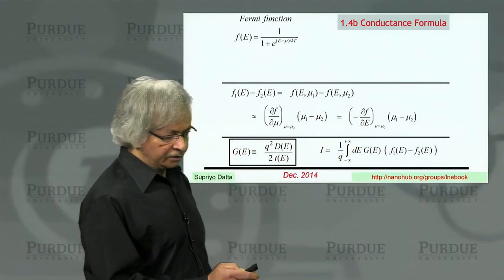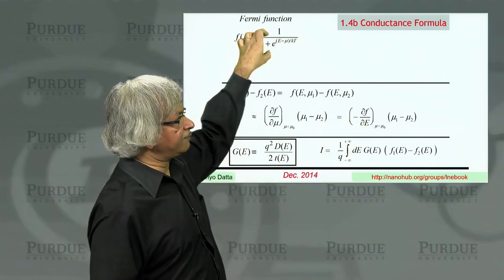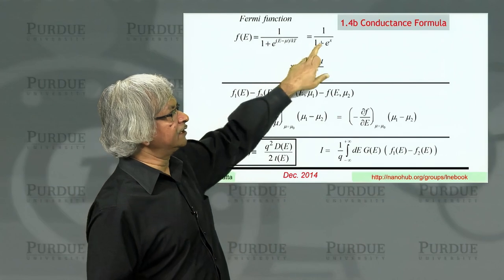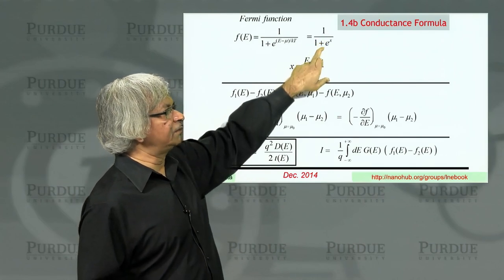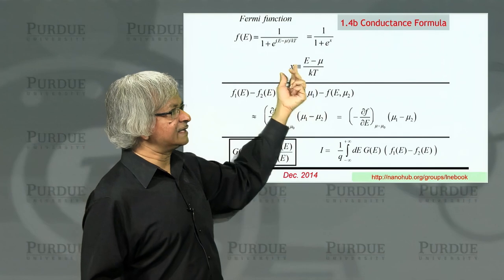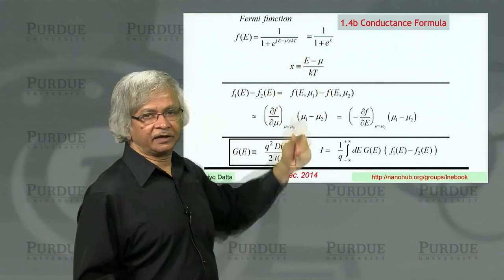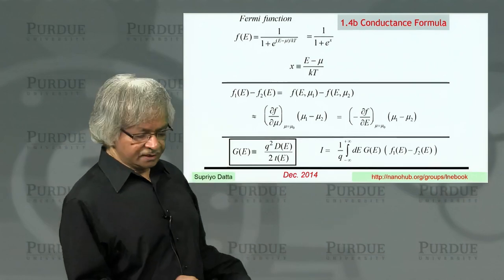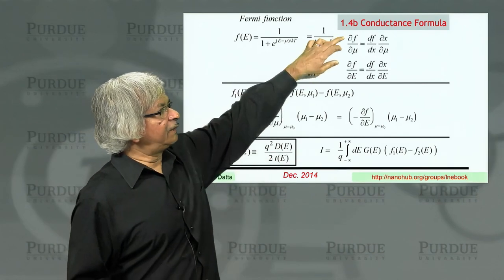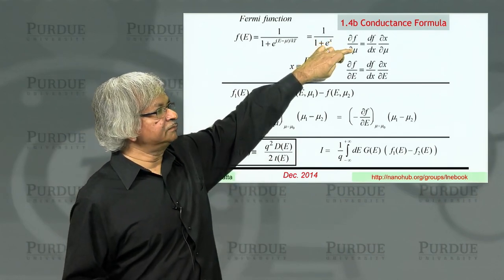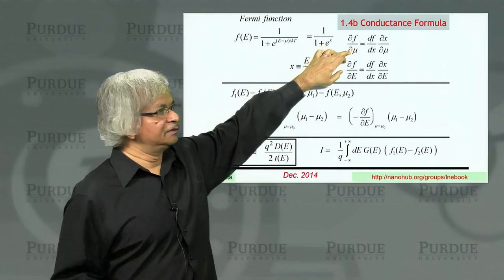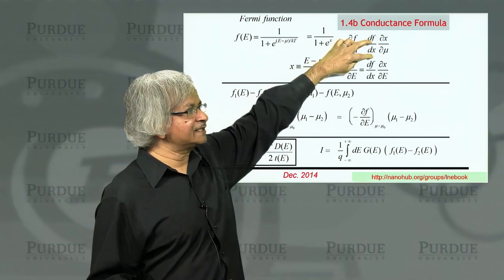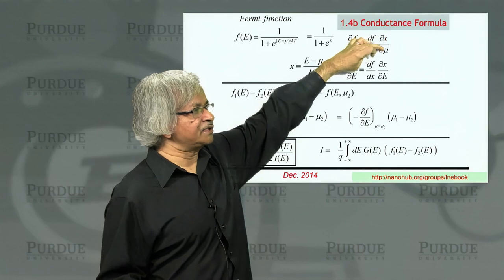So the way to think about this is, when you think of this F, you could write it in the form 1 divided by 1 plus e to the power x, where x is E minus mu over kT. Now, what is partial of F with respect to mu? Well, you could use this chain rule. That's equal to dF/dx times partial of x with respect to mu.